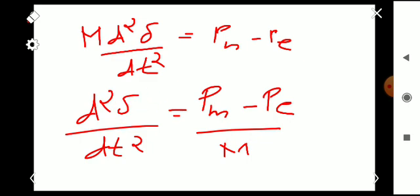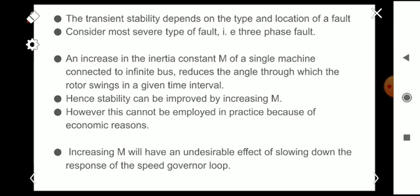It reduces the rotor angle through which the rotor swings in a given time interval. Hence the stability can be improved by increasing the value of M. However, this cannot be employed in practice because of economic reasons. Also, increasing M will have an undesirable effect of slowing down the response of the speed governor loop.